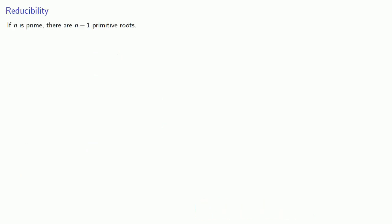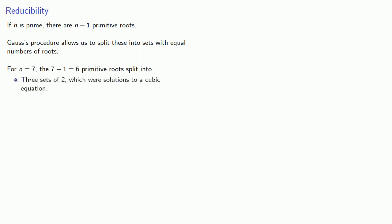So now let's think about it. If n is prime, there are n minus 1 primitive roots. And Gauss's procedure allows us to split these into sets with equal numbers of roots. Now, for n equals 7, the 7 minus 1, 6 primitive roots split into either 3 sets of 2, which were solutions to a cubic equation, and each set of 2 was a solution to a quadratic equation.